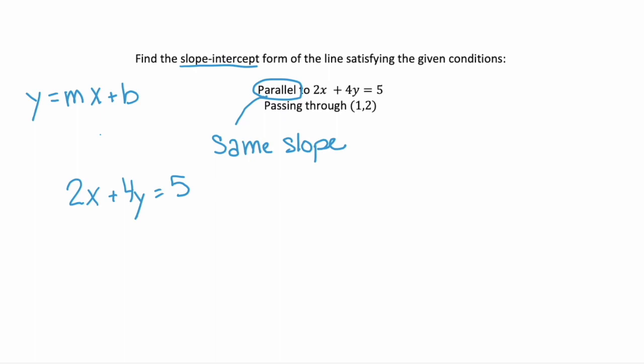So we need to isolate y. Let's subtract 2x from both sides, which gives us 4y equals negative 2x plus 5. I want that negative 2x first, because then it stays in that slope intercept format.